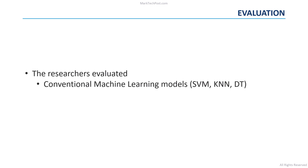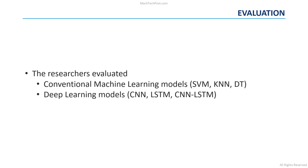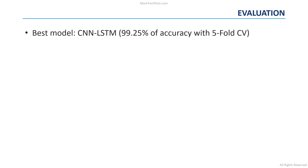The researchers decided to implement both conventional machine learning models and deep learning solutions, comparing recognition rates over EEG signals. Among the conventional models, they considered support vector machines, k-nearest neighbor, and decision trees. On the other hand, they trained different neural networks: a convolutional network, a recurrent one based on LSTM cells, and a combination of them. The CNN-LSTM model achieved the best recognition rate with an accuracy of 99.25%, obtained using five-fold cross-validation.